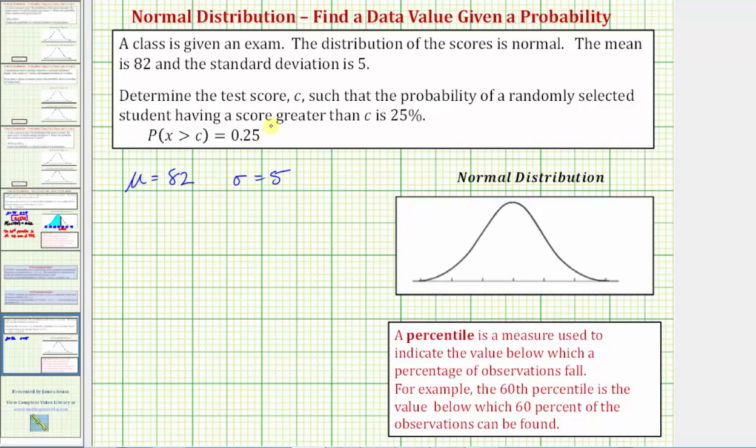Let's begin by modeling this distribution on the normal distribution curve shown here. Because the mean equals 82, the mean is here in the middle, and the horizontal axis is scaled by standard deviations.